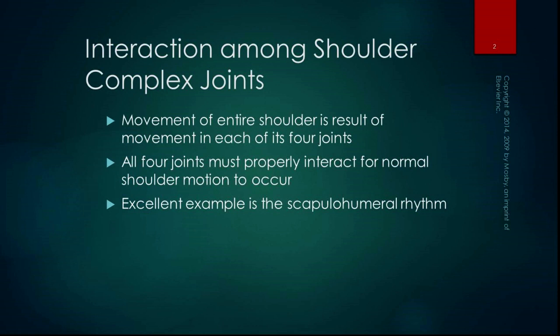The scapulohumeral rhythm is a good example of this. I worked with someone who had a sternoclavicular joint infection and had to have it surgically debrided twice, and it seriously affected their glenohumeral motion. After recovery, we worked a lot in therapy on getting his glenohumeral motion back. I've also worked with people who had clavicle fractures and AC joint separations that severely impaired glenohumeral motion. And if glenohumeral motion is impaired, you often get faulty scapulothoracic mechanics — so we're not working on any of these joints in isolation.